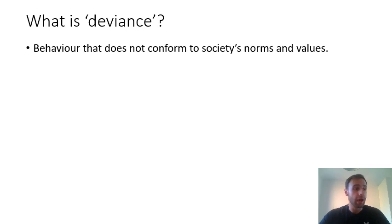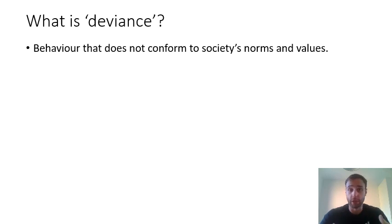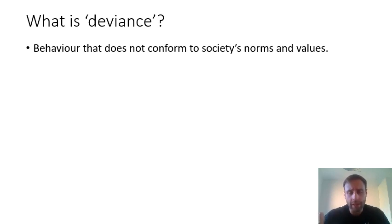So an example of a deviant act could be men wearing women's clothing. It's not criminal. It's not abnormal in some spheres, for example in the subculture of drag queens or cross-dressing. But if I turned up to school wearing a dress, eyebrows might be raised. That's a deviant act. It's not criminal, but it's deviant — it goes against what is considered normal in society.